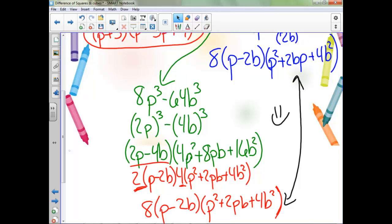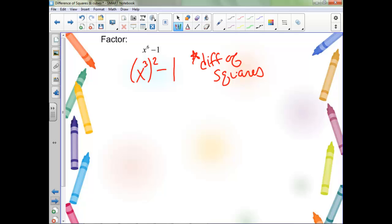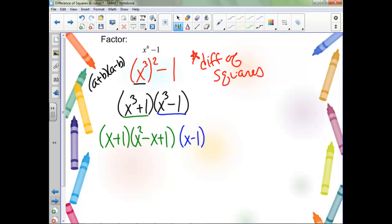What about this one? Notice we can rewrite this as x cubed squared minus 1, so it's a difference of squares. Remember our difference of squares was a plus b and then a minus b. So we'll have this term plus our 1, and then this term minus our 1. And now notice, this first one is a sum of cubes, and this one is a difference of cubes. So this is our answer.